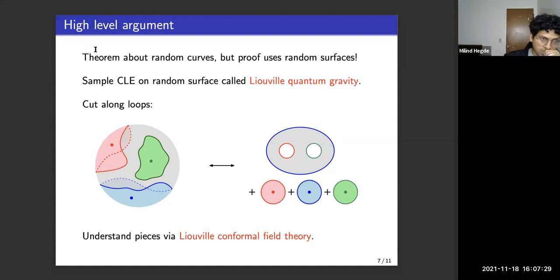So I'm going to give a high-level argument. Our theorem was only about random curves, these random interfaces that are closely connected to statistical physics. But our proof actually uses random surfaces as well. So in our proof, we sample a conformal loop ensemble on top of a random surface called Liouville quantum gravity. And then we cut along the three outermost loops around three points, and that gives us four surfaces here.